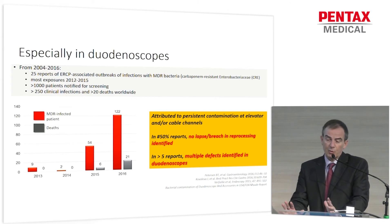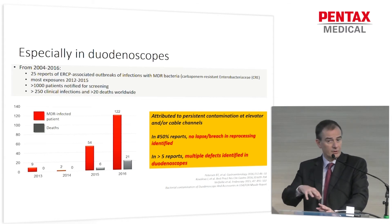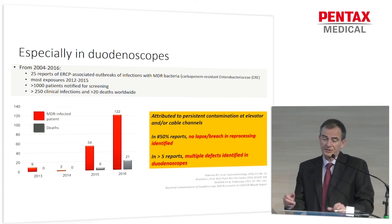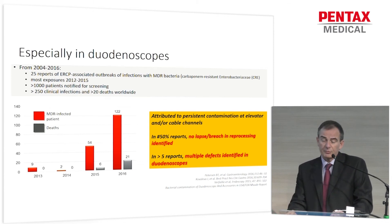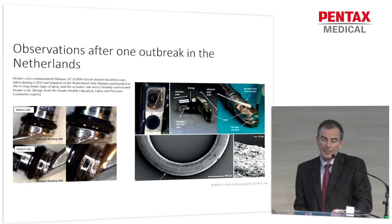In approximately half the reports, there was no lapse or breach in reprocessing identified, meaning no fault in staff procedure. And in more than five reports, multiple defects were identified in the duodenoscopes themselves.